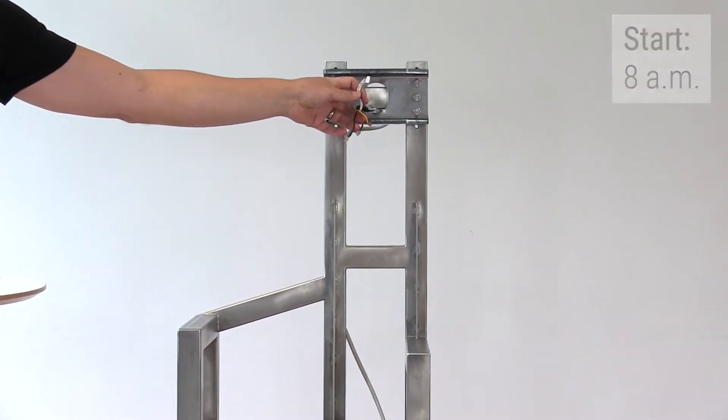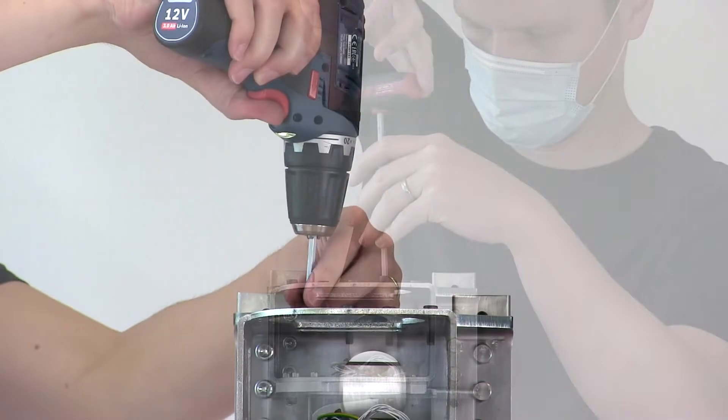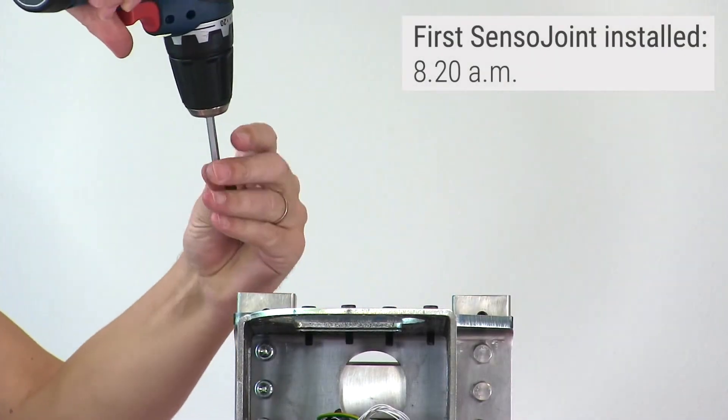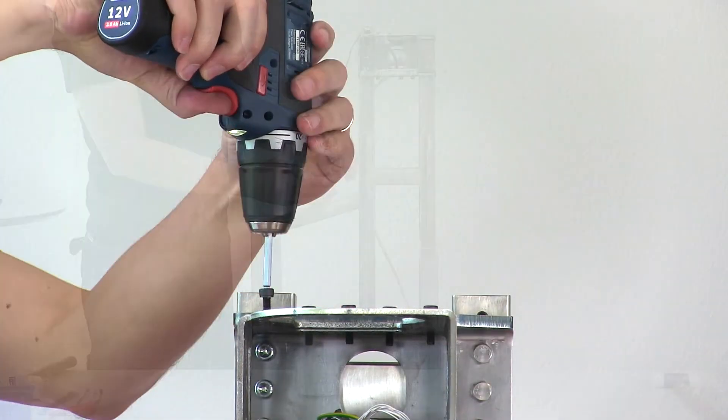It only takes about 20 minutes from the start of the assembly to wire the base frame and finish installing and fully wiring the first SensoJoint.